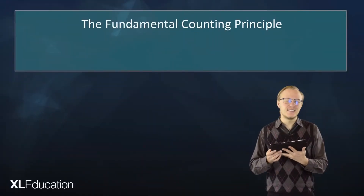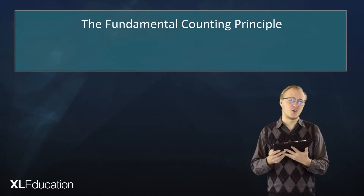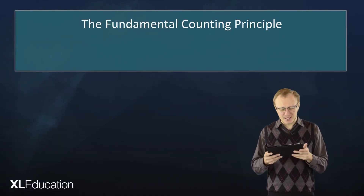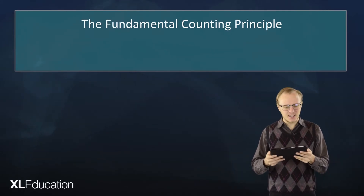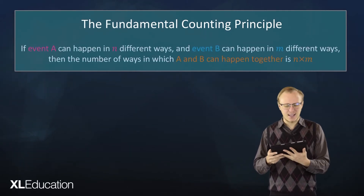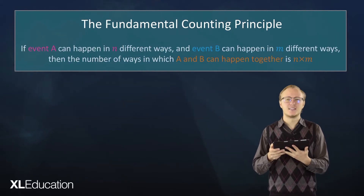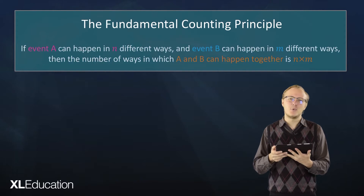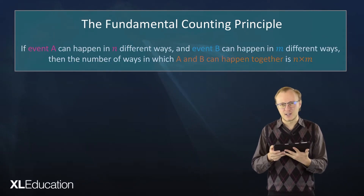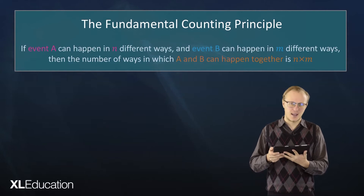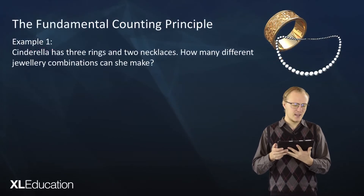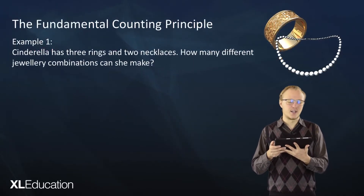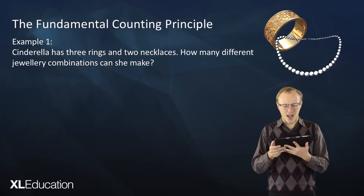The fundamental counting principle — and this thing is very important because it has the word 'fundamental' in it. What it says is: if event A can happen in n different ways and event B can happen in m different ways, then the number of ways in which A and B can happen together is n times m. Let's have a look: Cinderella has three rings and two necklaces — how many different jewelry combinations can she make?